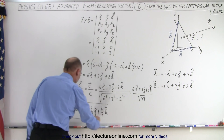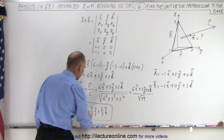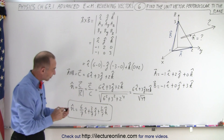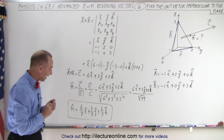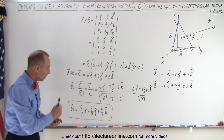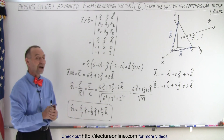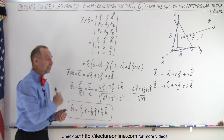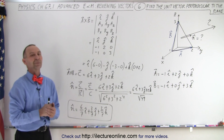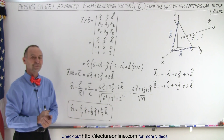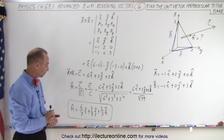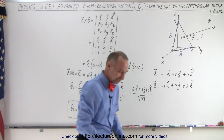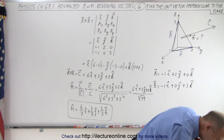Finally, the unit vector perpendicular to the plane is 6 over 7 in the i direction, plus 3 over 7 in the j direction, plus 2 over 7 in the k direction. And if you don't like i, j, and k, you can use x, y, and z unit vectors — it's the exact same result. But that is how we find the unit vector perpendicular to that plane. Thank you.